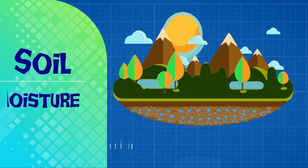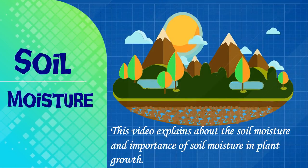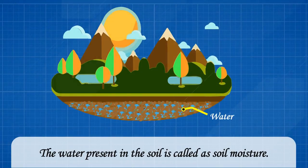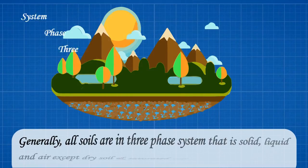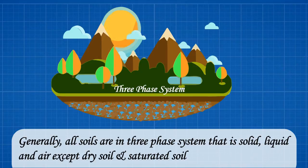Soil moisture. This video explains about soil moisture and the importance of soil moisture in plant growth. The water present in the soil is called soil moisture. Generally, all soils are in a three-phase system: solid, liquid, and air.